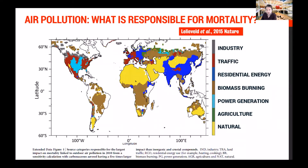If we look at this map we can see that residential energy is the biggest air pollution killer across some of the most populated regions on our planet including India, China and Japan. Here in the UK it's air pollution from traffic that is the biggest killer, but my research focuses on the tropics, and if we look to this region you'll see that this shade of brown indicates that the biggest air pollution killer is biomass burning associated with wildfires and fires on agricultural land.